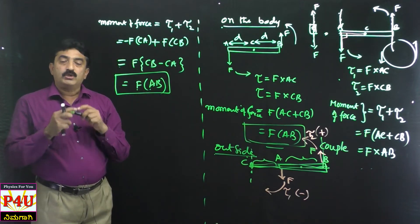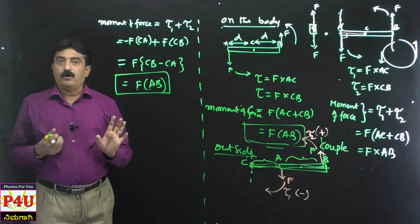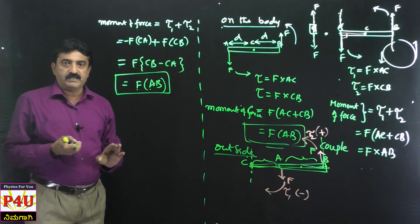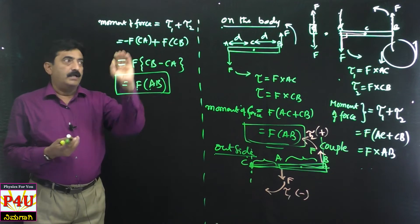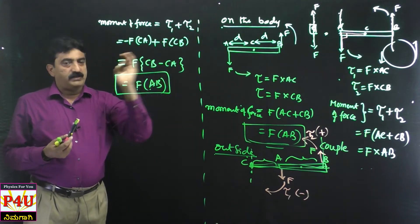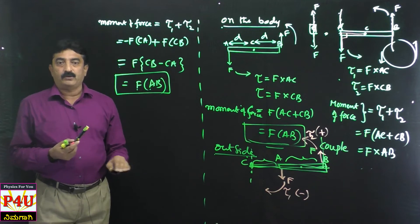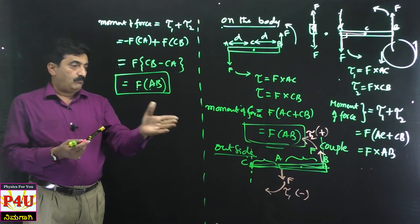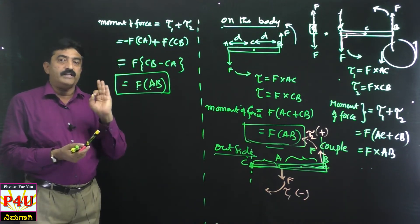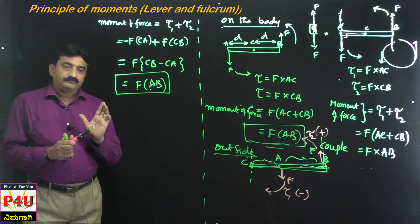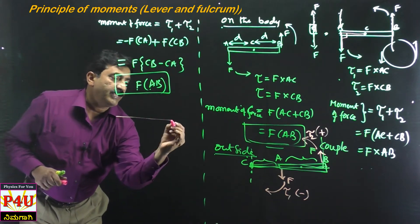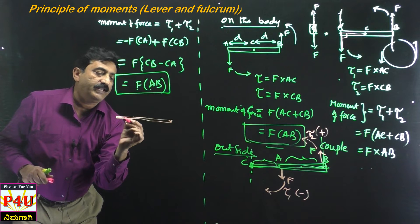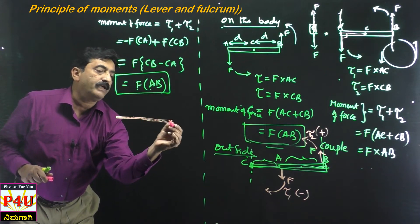Define couple. Show that couple is the same irrespective of the fixed point — whether the fixed point is on the body or outside the body, you get the same answer: F·AB. I hope you understood this explanation.